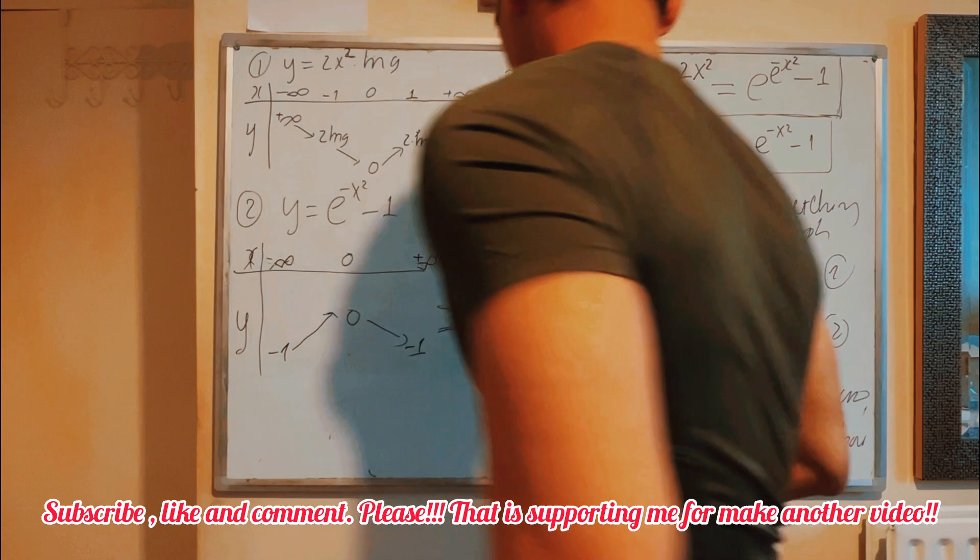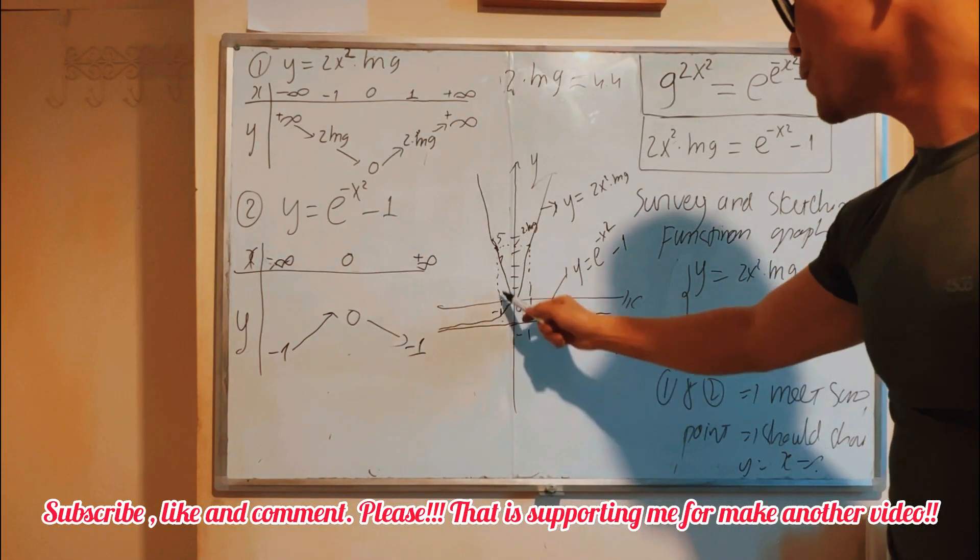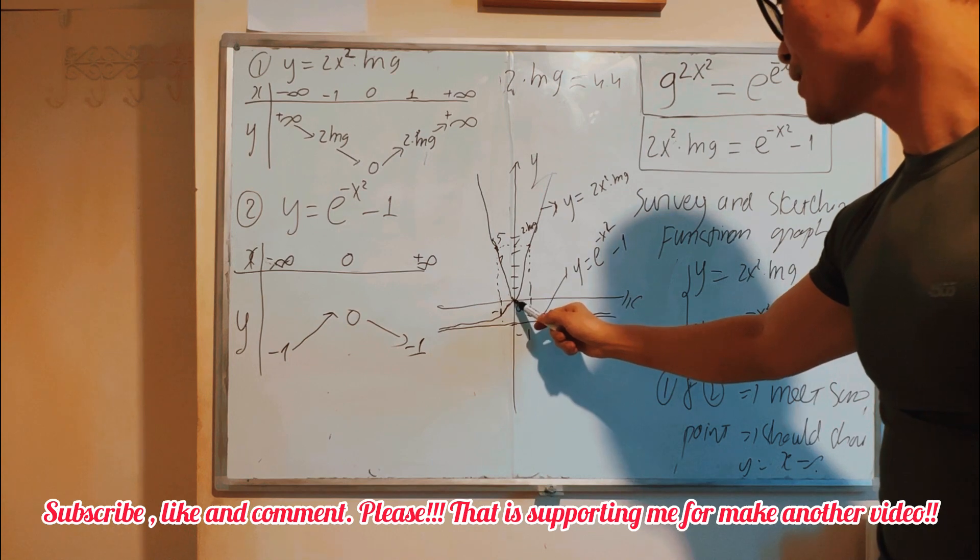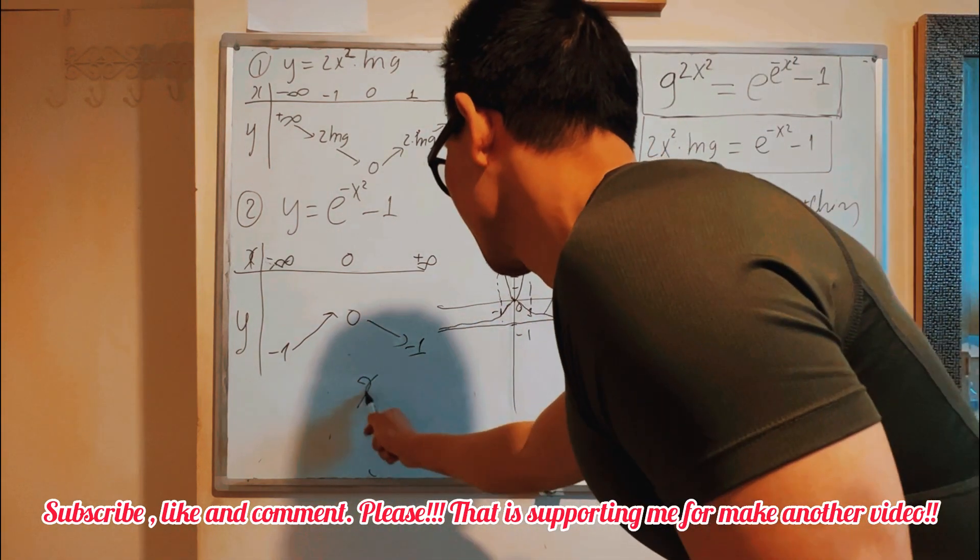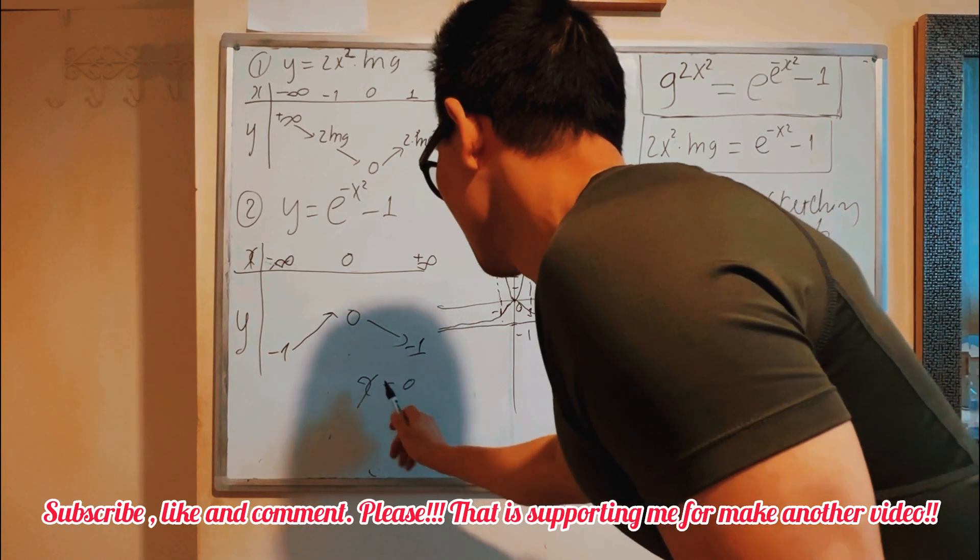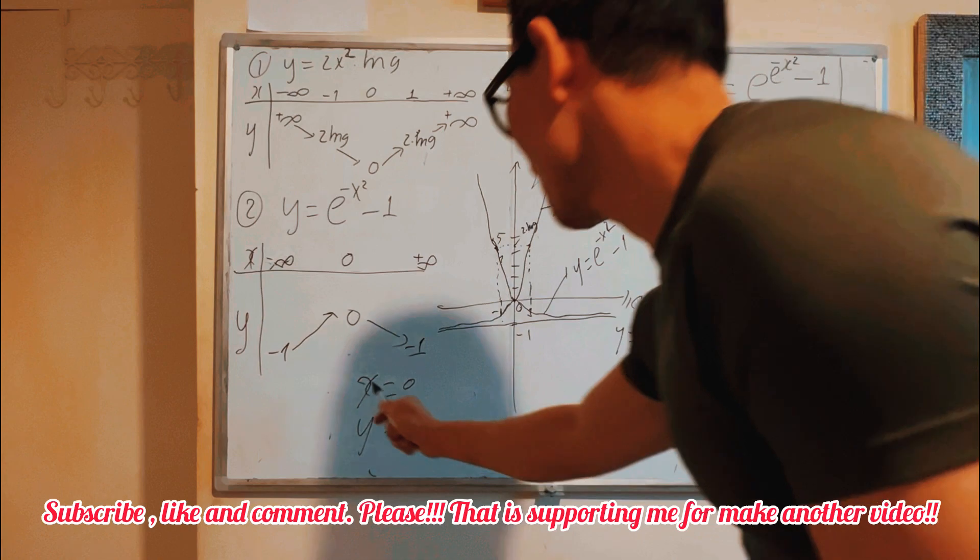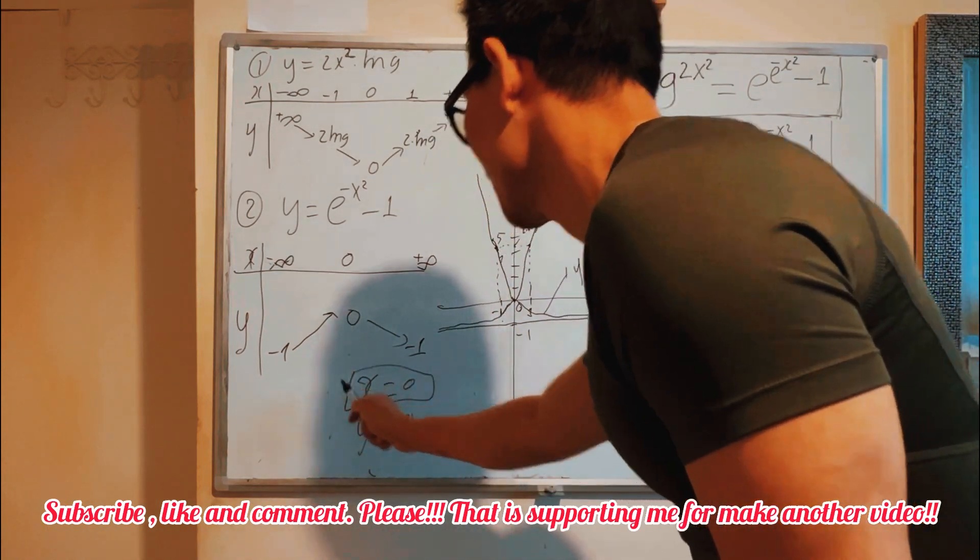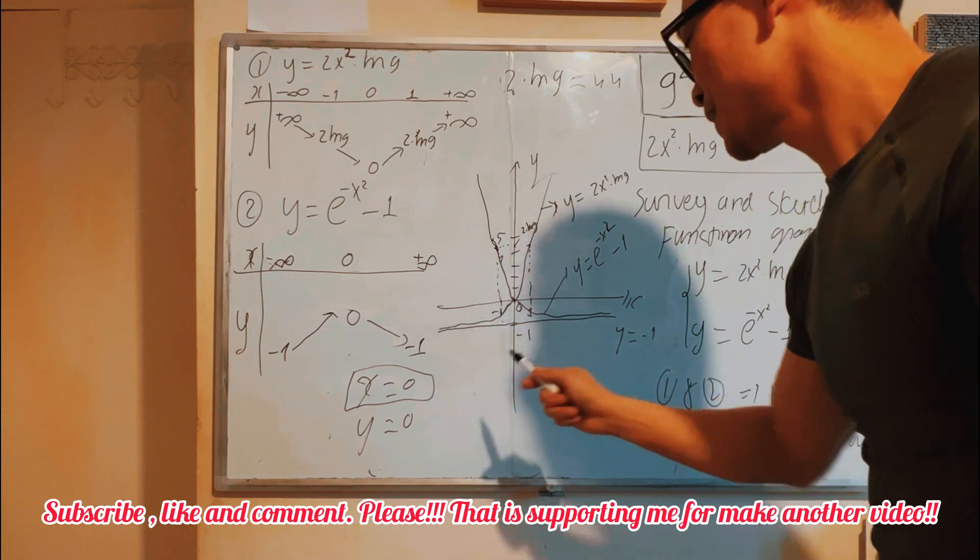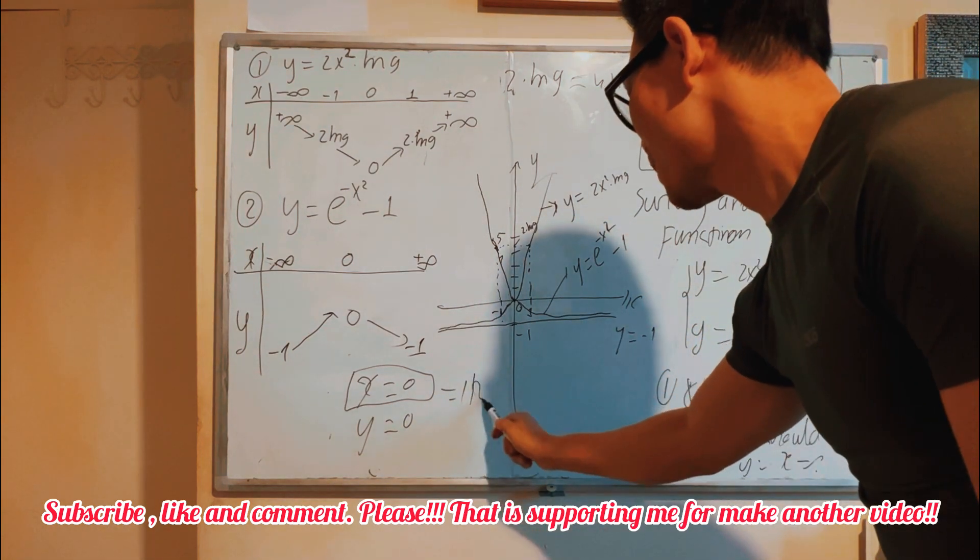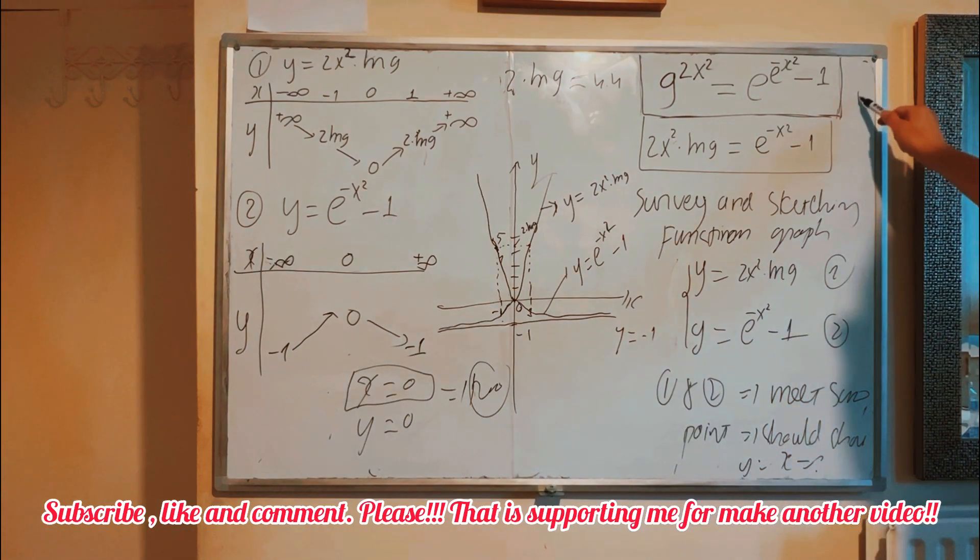Look at graph 1 and 2. You see, two graphs intersect at only one point: x equals zero and y equals zero. Yeah, so x equals zero. That's the value of y equals zero.